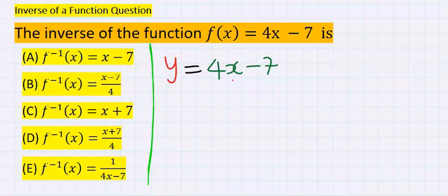Step number 2. Make x the subject, that is, isolate x. To achieve this, we are going to take minus 7 across, so that it becomes plus 7. Hence, you have y plus 7 is equal to 4x.